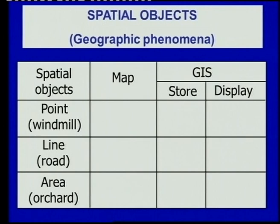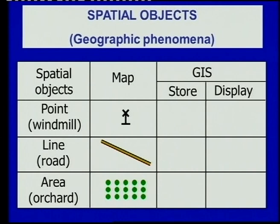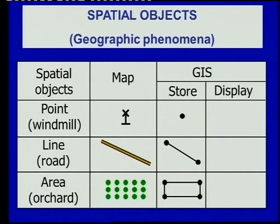Looking at the spatial objects: at the top we have a point feature — in this case a windmill or wind pump. We take a line symbol as being a road, and an area symbol as being an orchard. On the map they are depicted with a wind pump symbol, a road symbol, and an orchard symbol. The GIS, however, stores the windmill as a node or point in its database, the road as two nodes and an arc, and the orchard as a polygon which has four nodes, each node linked with an arc.